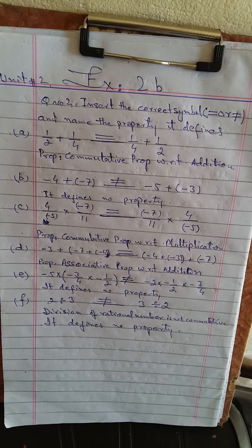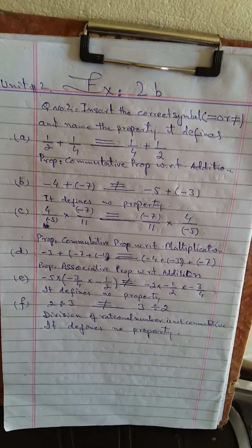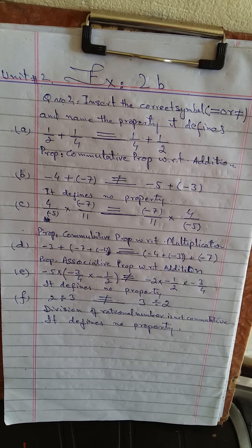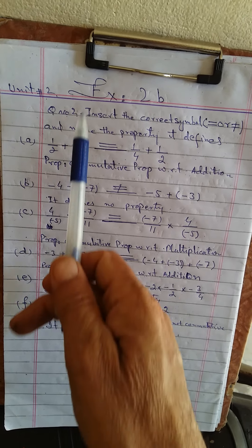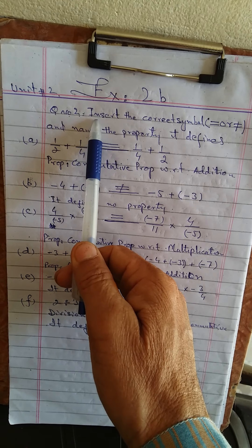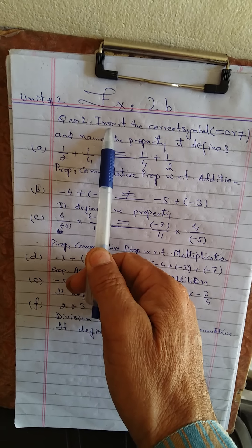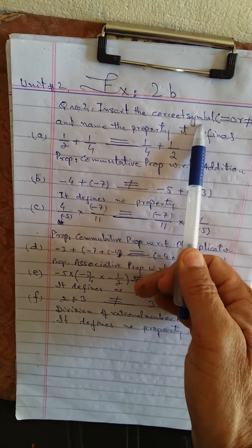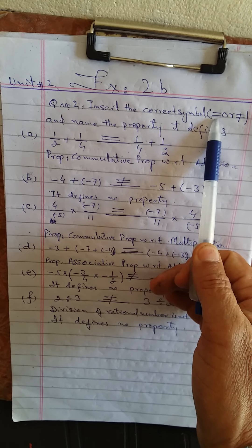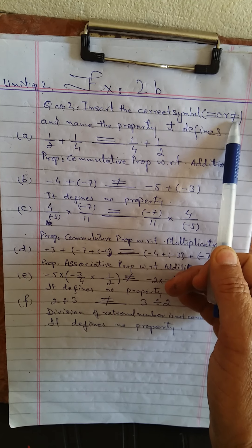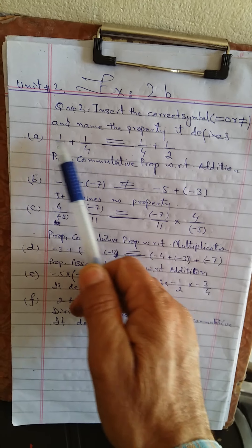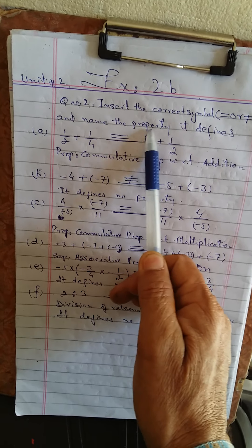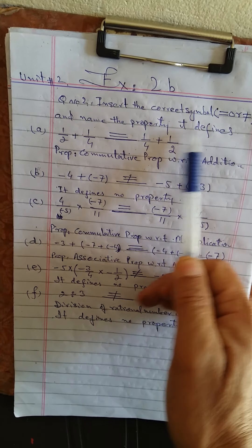Bismillahirrahmanirrahim. Exercise number two, exercise two B. Question number two — the statement of question number two is: insert the correct symbol, equal or not equal, and name the property it defines.